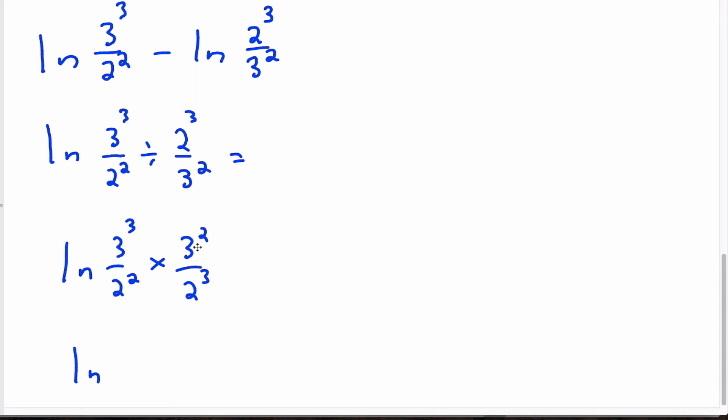That 3 cubed times 3 squared is 3 to the power of 5. 2 to the power of 5. And look at that. Both to the power of 5. The 5 can come out front. Natural log, 3 over 2. And we have reached our goal.